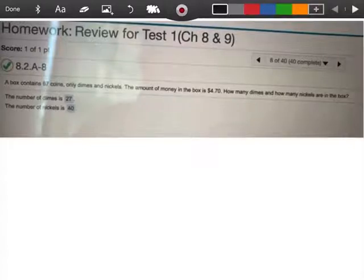Here says a box contains 67 coins, only dimes and nickels. The amount of money in the box is $4.70. How many dimes and how many nickels are in the box?